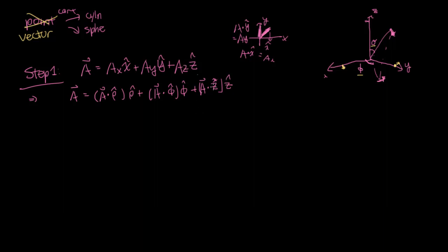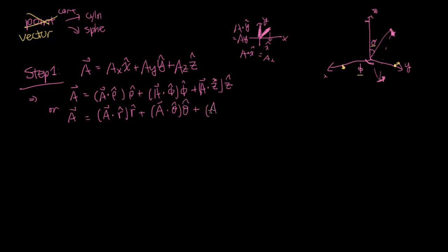If you're doing spherical, you would do A dot R-hat, which gives you your R component, plus A dot theta-hat, which gives you your theta component, plus A dot phi-hat, which gives you your phi component.